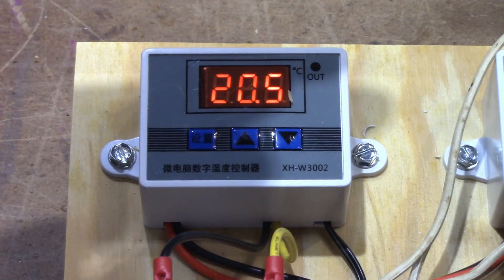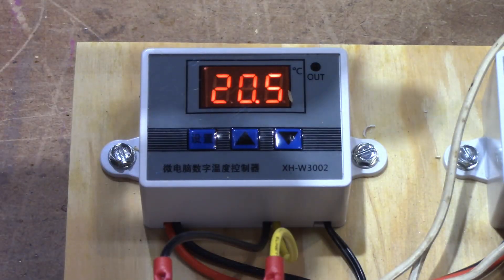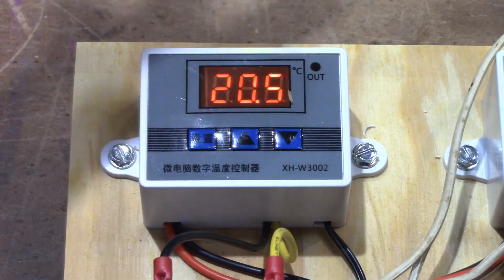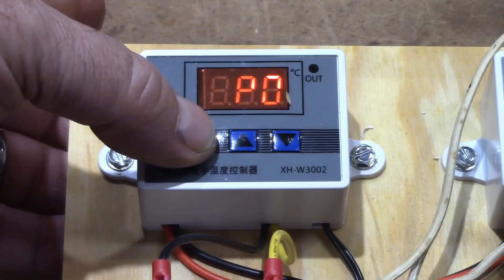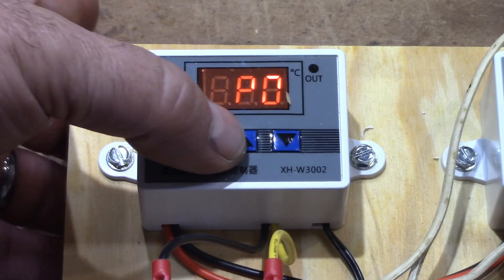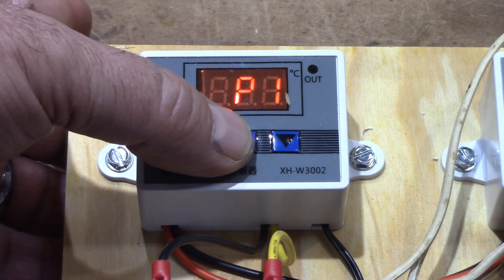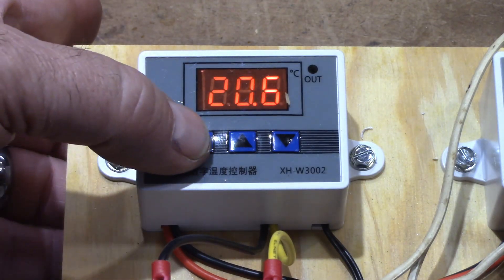So if you want it to come on at say 5 and then turn off at say 10 degrees, then you would set P0 to 5 and P1 to 10 degrees.